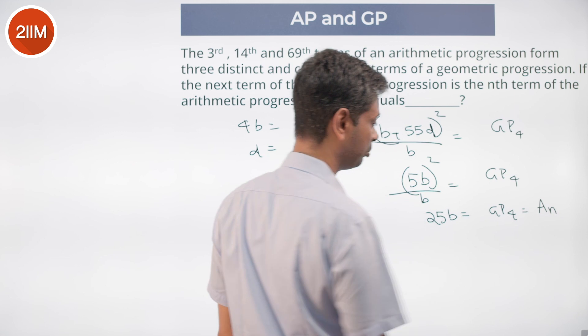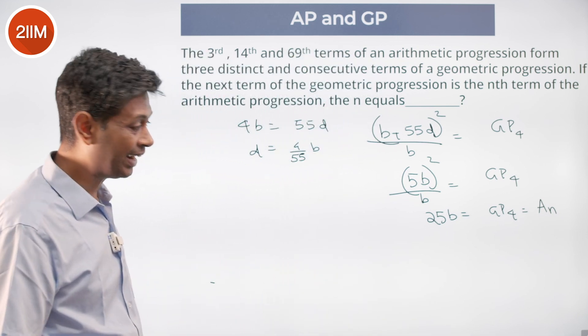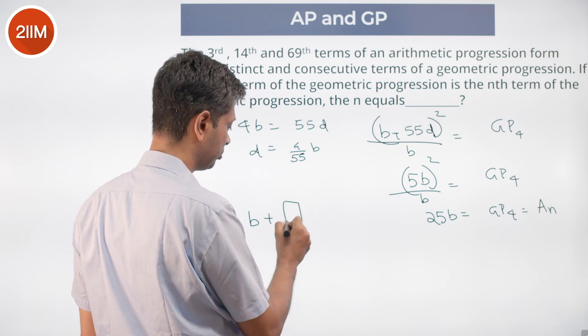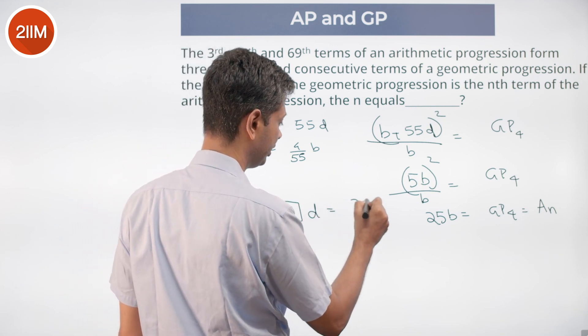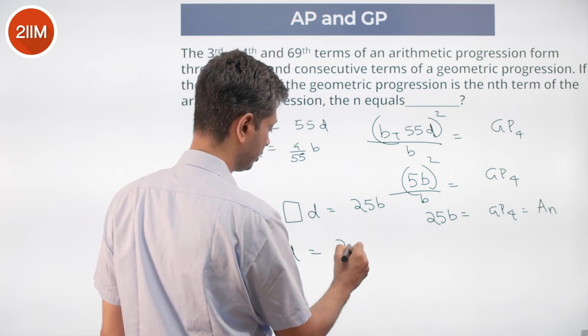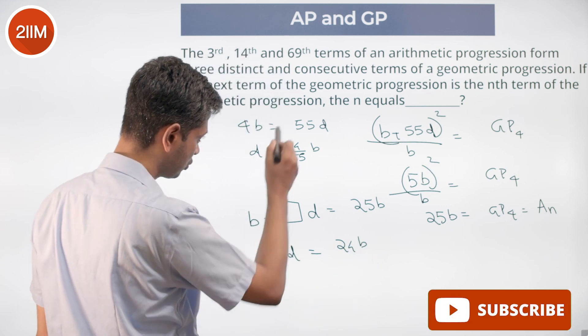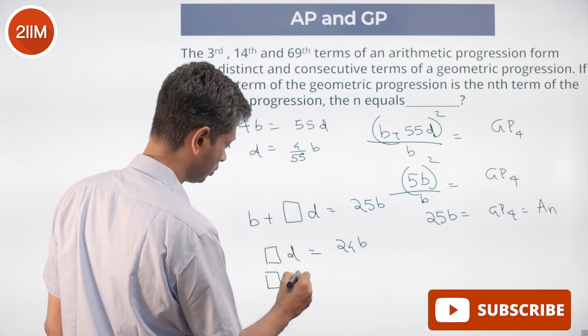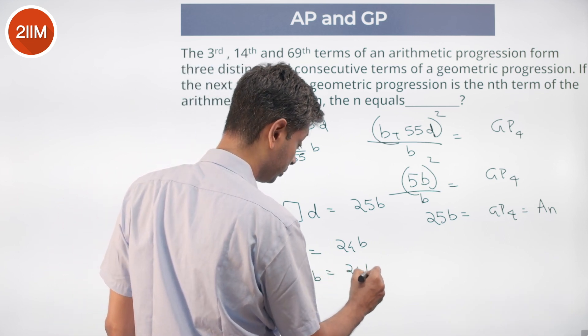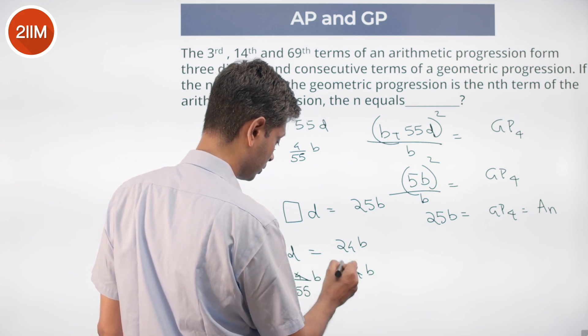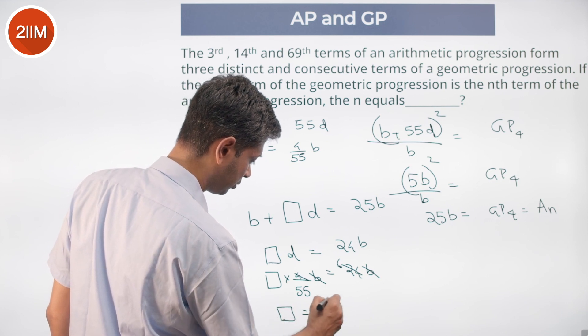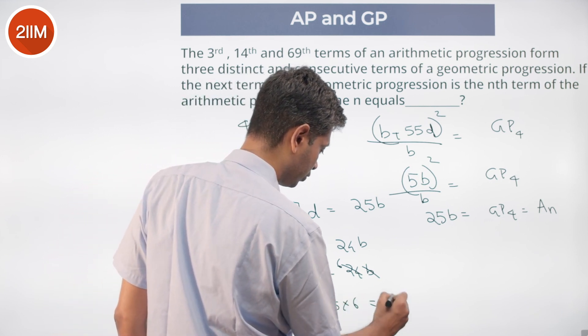So this is nth term of the ap. Now ap was anchored around b. b plus some number of times d equals 25b, or some number of times d is 24b. d is 4 by 55b, this into 4 by 55b is 24b. b gets cancelled, this number is 55 into 6 which is 330.